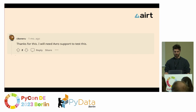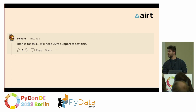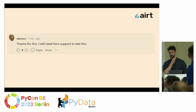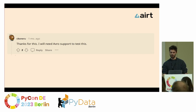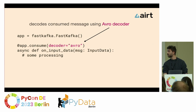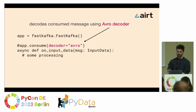Then we got our first feedback — people liked it, but they needed support for other encodings; they didn't like JSON-only encoding and decoding. So we added that. Right now, JSON decoding is the default, but if you want to use Avro, you can always define that in the consumer decorator. You can also pass a custom function that decodes bytes, and it will inject the decoded message into your function.